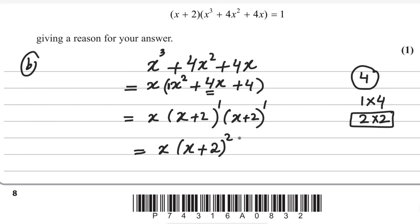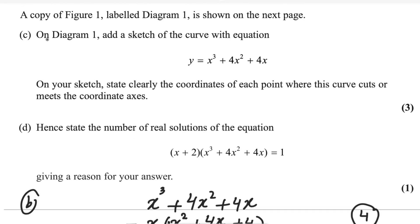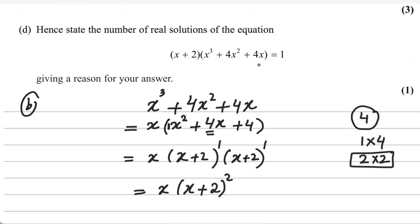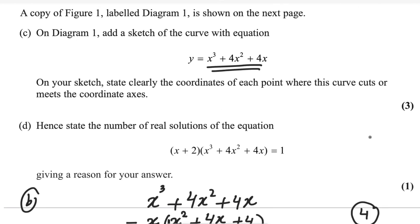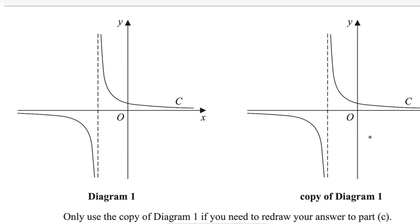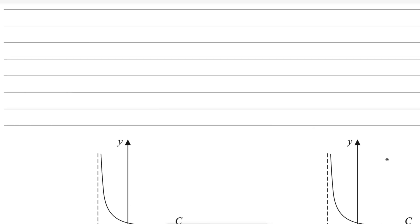So the second part is done. For part c, on diagram 1, add a sketch of the curve with equation y equals x cubed plus 4x squared plus 4x. We already factorized this as x(x + 2)², which will help us sketch the graph. On your sketch, state clearly the coordinates of each point where the curve meets the coordinate axes. Let me do some calculations — first find the x-intercepts and y-intercepts.